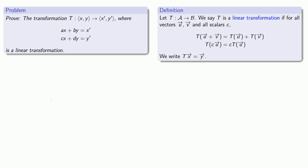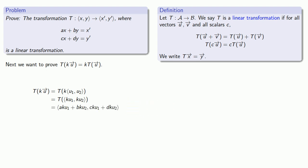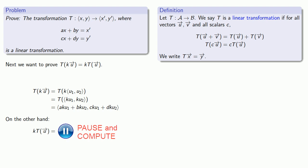The second part of being a linear transformation is that the transformation applied to a scalar multiple has to be the scalar multiple of the transformation. So let's apply our transformation T to a scalar multiple of u — that's ku1, ku2. Applying our transformation T to this vector gives us this vector. And we'd like this to be k times the transformation applied to u, so we'll apply transformation T to u first, and then scalar multiply the result by k.